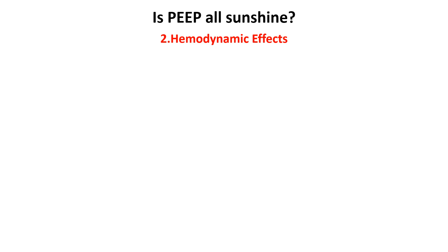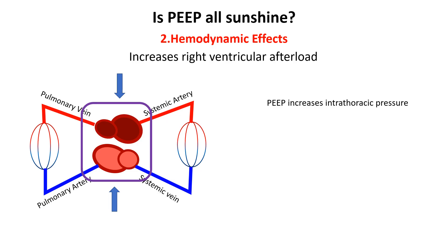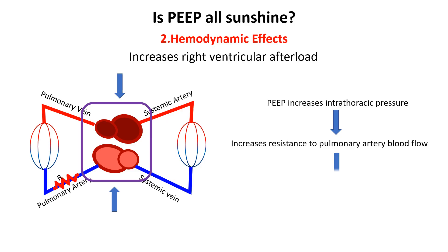In patients with pulmonary hypertension or right heart dysfunction, the right ventricle already struggles to pump blood into the lungs due to increased pulmonary vascular resistance. High PEEP further raises intrathoracic pressure, which compresses pulmonary blood vessels and increases pulmonary vascular resistance. As a result, the right ventricle has to work harder to push blood forward, leading to increased right ventricular afterload. This added strain can worsen right heart failure, making it more difficult for the heart to effectively circulate blood.